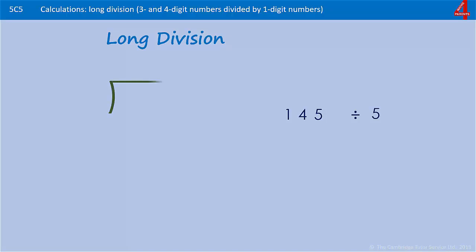When we set these out, it's similar to the short division bus stop method, where the number you're dividing goes inside the bracket and the number you're dividing by goes outside. It starts off very similarly to short division — we deal one digit at a time with the number we're dividing, and we say how many times does five go into one? It doesn't, so we put a zero above it.